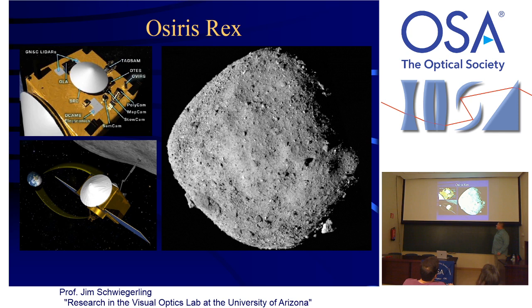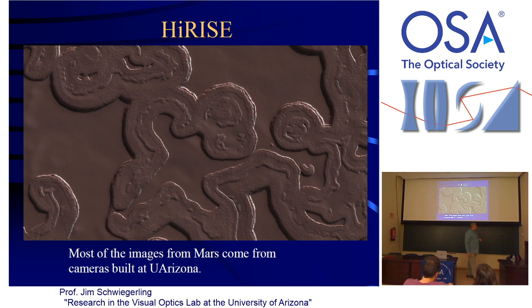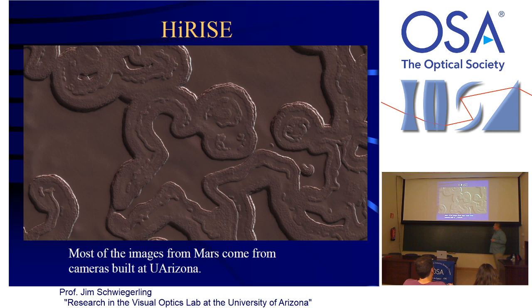These are some of the large optics we make. The biggest we can do is about 8.4 meters — this is underneath the football stadium. Each one starts as chunks of glass placed in a spinning oven; the glass melts, flows up the edges due to the spin, and slowly cools into a roughly parabolic shape. Other projects include OSIRIS-REx — a spacecraft sent to intercept an asteroid, take a sample, and return it to Earth. We built the PolyCam camera for imaging the asteroid's surface. Most Mars pictures have likely been taken with cameras built at the University of Arizona, including HiRISE on the orbiting satellite and cameras on the rovers.